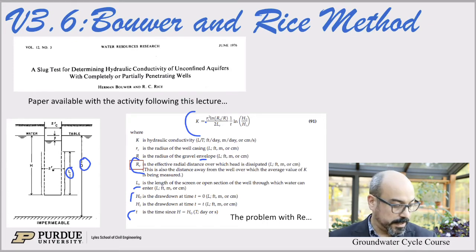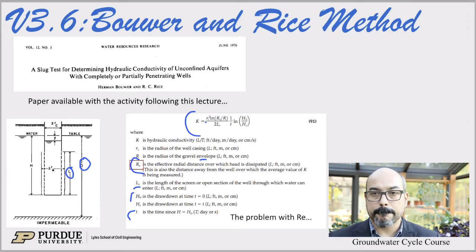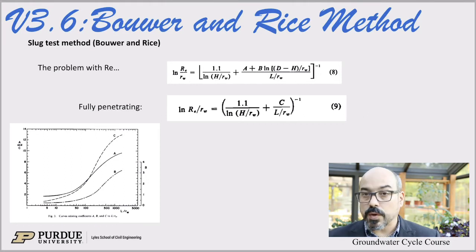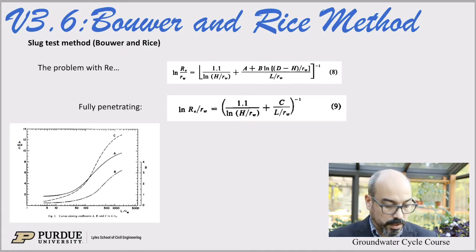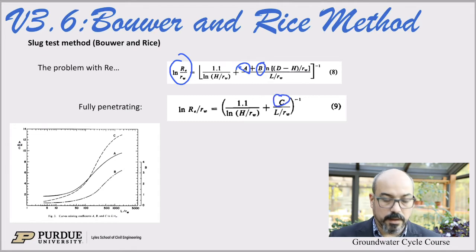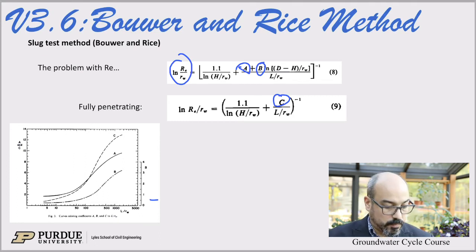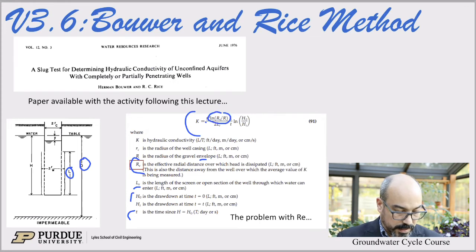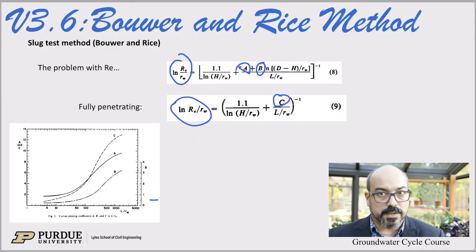The trick used in the Boer and Rice paper is that instead of finding what the effective radius is directly, we have empirical expressions for calculating the ratio ln(re/rw). There are constants — a, b, and c — that you read off curves on the left-hand side. You read those constants, plug them in, and that gives you the ratio you need to find K.